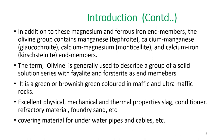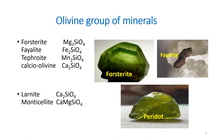Olivine has a typical green color and occurs in mafic and ultramafic igneous rocks. It has excellent physical, mechanical, and thermal properties and can be used as a slag conditioner, refractory material, foundry sand, and as a covering material for underwater pipes and cables. The olivine group includes forsterite, fayalite, tephroite, calcium olivine, larnite, monticellite, and others.